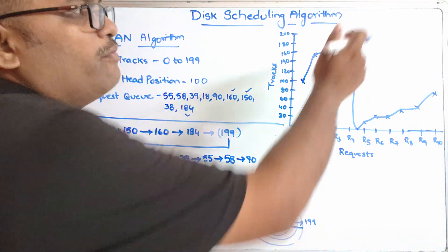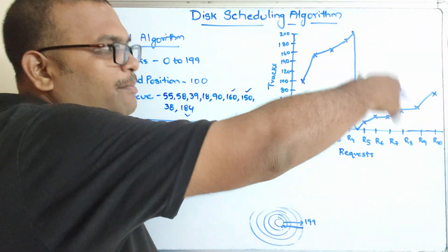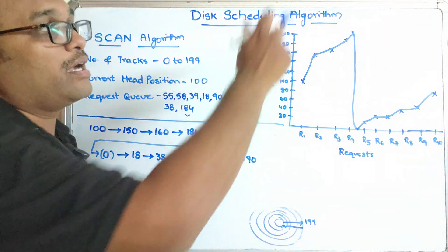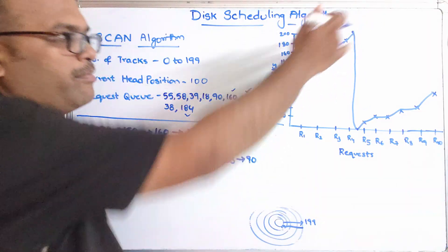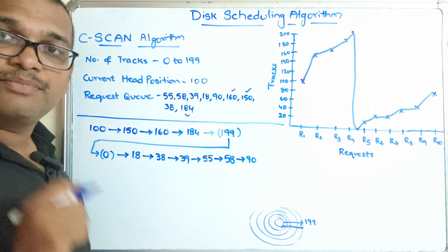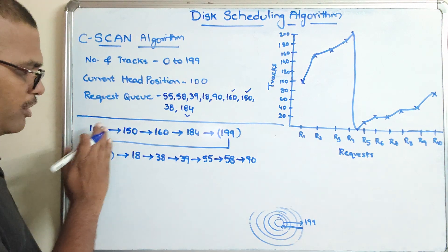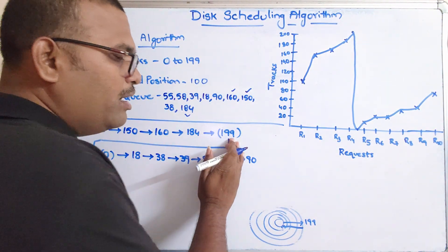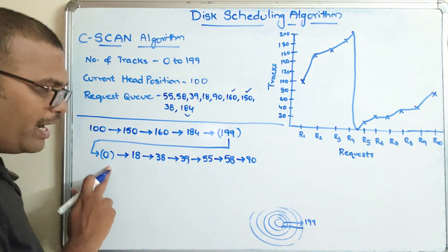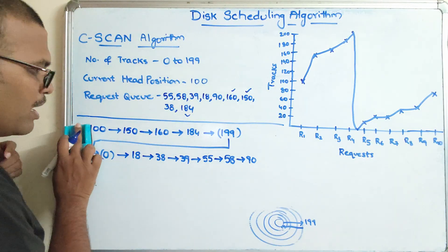In the scan algorithm, whenever it reaches the maximum track number, it starts processing requests while going backwards towards 0 — whatever requests are there, all those are processed. But in C-scan, the read-write head moves directly from the maximum track to the minimum track without processing any requests. That's why we call it C-scan, which stands for circular scan algorithm. So the process is: 100 to 150, 150 to 160, 160 to 184, 184 to 199 which is the maximum track, then immediately the read-write head comes to 0, and from 0 it starts processing requests again.